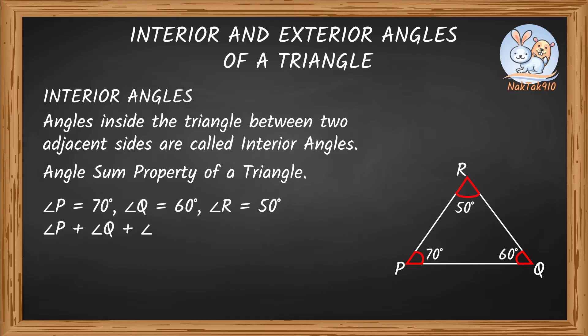Angle P plus angle Q plus angle R equals 70 degrees plus 60 degrees plus 50 degrees, which is 180 degrees.